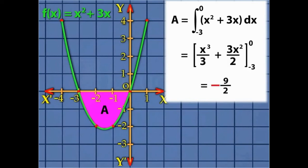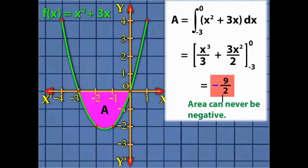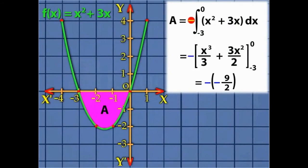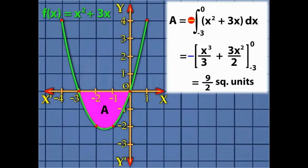However, area can never be negative. In such cases where we find the area bounded by curves below the x-axis, we put a negative sign before the definite integral that represents the area. This is because f(x) becomes less than 0 for every x in the closed interval [-3, 0]. Now the area is 9/2 square units.